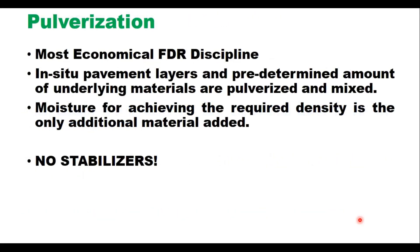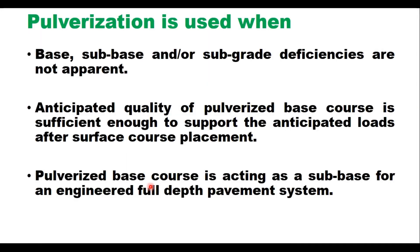Pulverization is the most economical FDR discipline. In this case, in-situ pavement layers and a predetermined amount of underlying materials are pulverized and mixed, and moisture is the only additional material added to achieve the required density. No stabilizer is used. This process is used when base, sub-base, and/or subgrade deficiencies are not apparent and the anticipated quality of the pulverized base course is sufficient to support anticipated loads after surface course placement, acting as a sub-base for an engineered full depth pavement system.